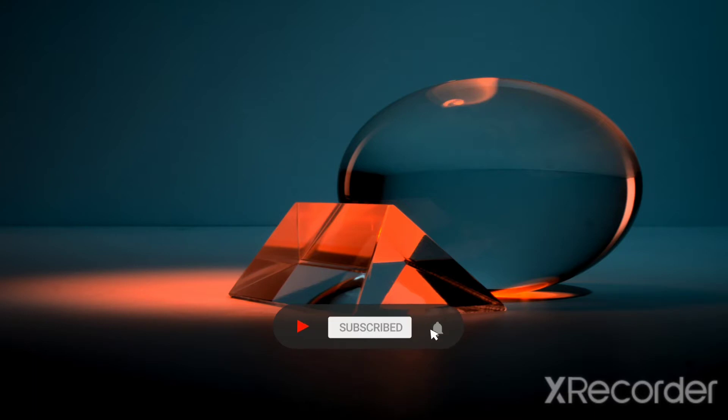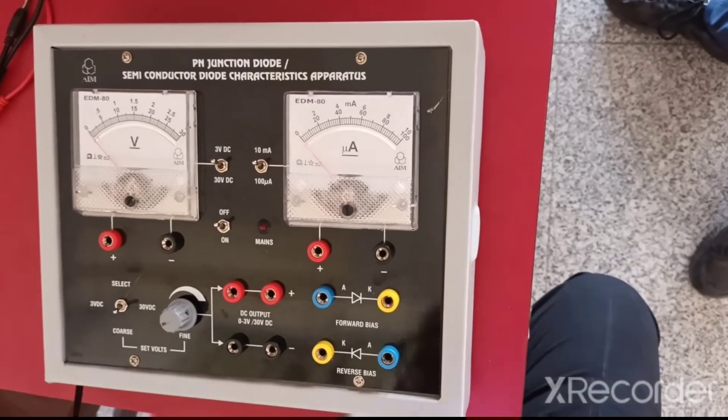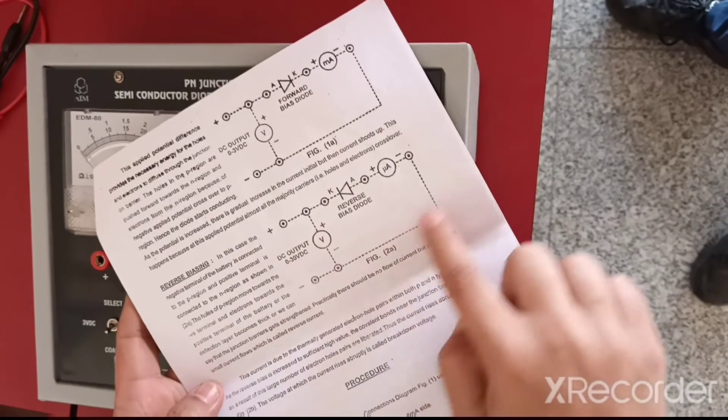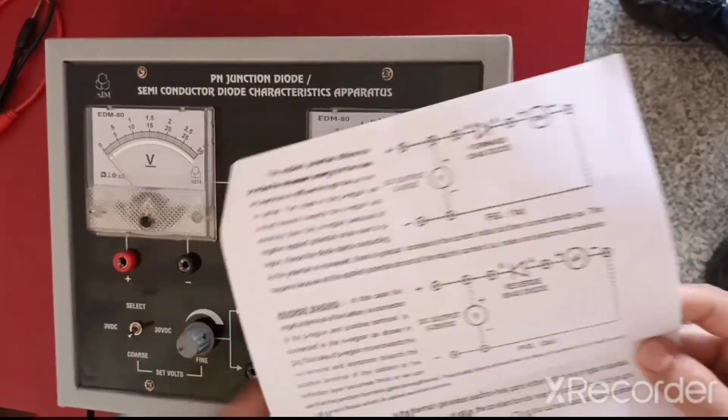Please subscribe my channel and press the bell icon for more updates. Hello students, today we are going to discuss PN junction diode reverse bias. So just as you have seen, this is the circuit diagram which I am just going to follow. Let's see how it works.